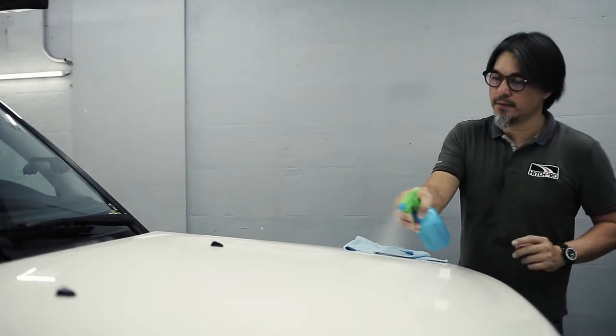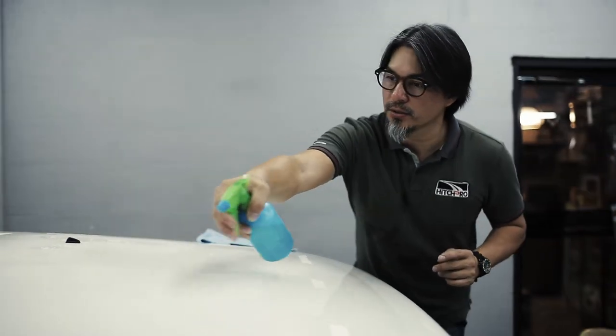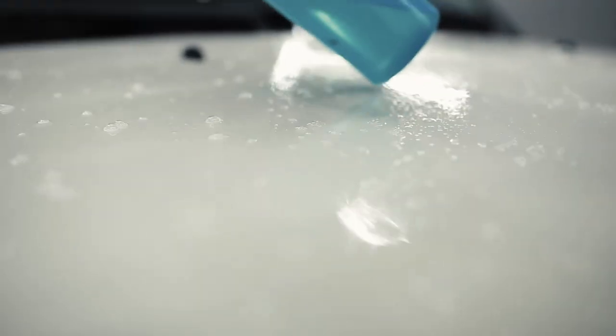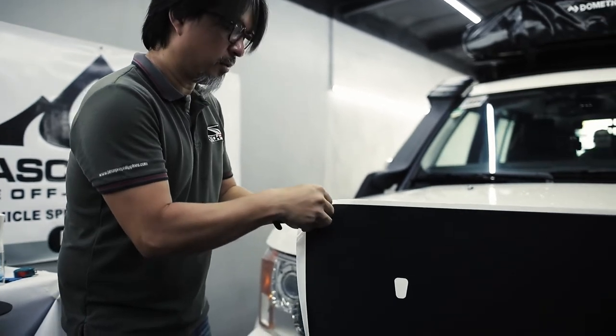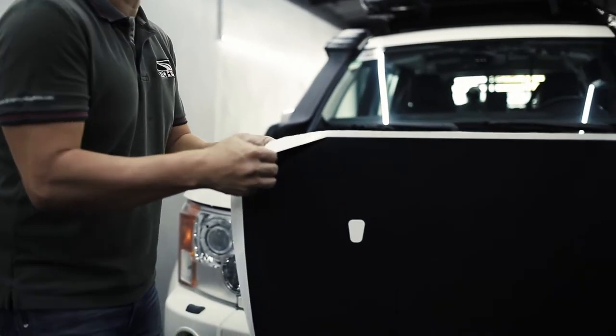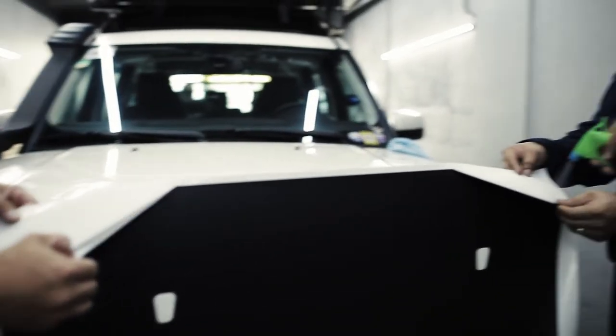The first step in installing the vinyl wrap is using a soap sprayer—just a drop of washing soap in a spray bottle. Soak the whole surface. By doing this, when we apply the film we can still move it around.